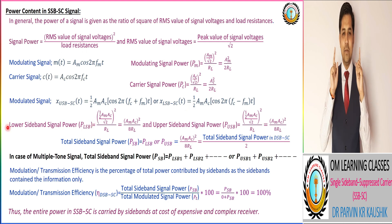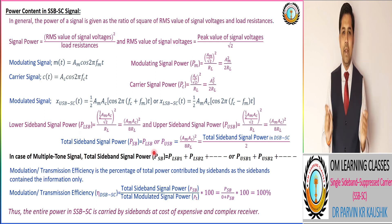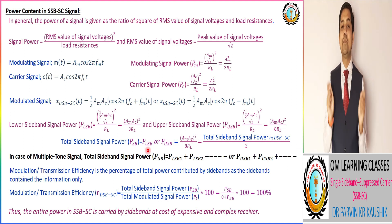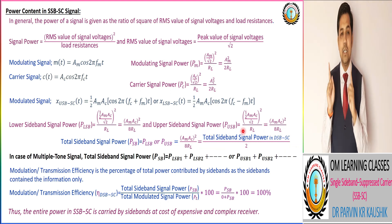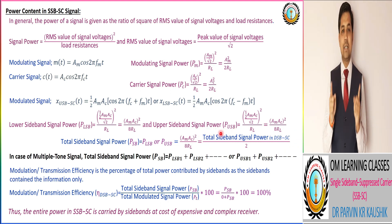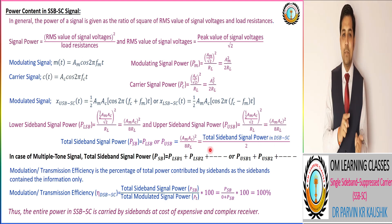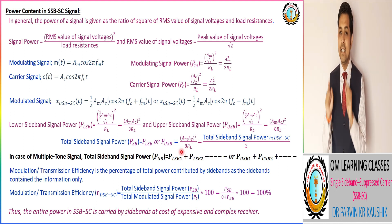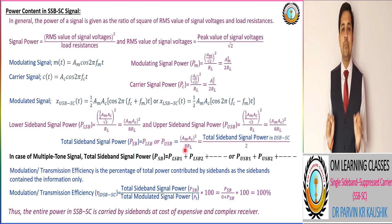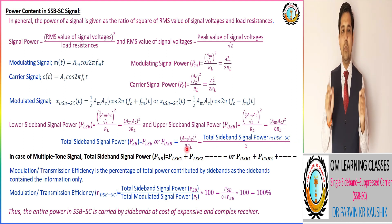A very important point: the total sideband power in SSB-SC is equivalent to either the upper sideband power or the lower sideband power. This is different from DSB-SC, where the total sideband power equals the upper sideband power plus the lower sideband power. This distinction is one important point to remember when comparing SSB-SC and DSB-SC modulation techniques.